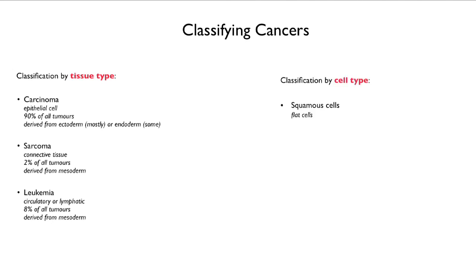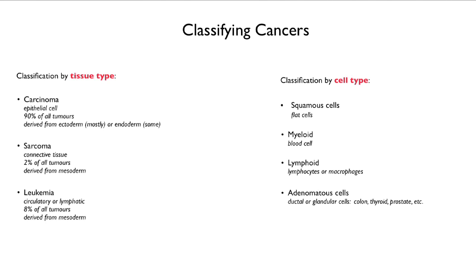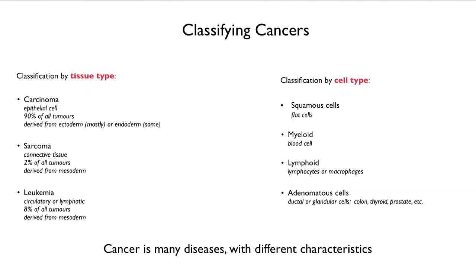We can also classify by cell type. Squamous cell cancers are derived from flat cells. Myeloid cancers, like myelomas, are derived from blood cells. Lymphoid cancers are cancers of lymphocytes or macrophages. And adenomatous cancers are derived from ductal or glandular cells — so that would be, for example, colon, thyroid, or prostate cancer. You can see that cancer is many diseases and they have different characteristics.